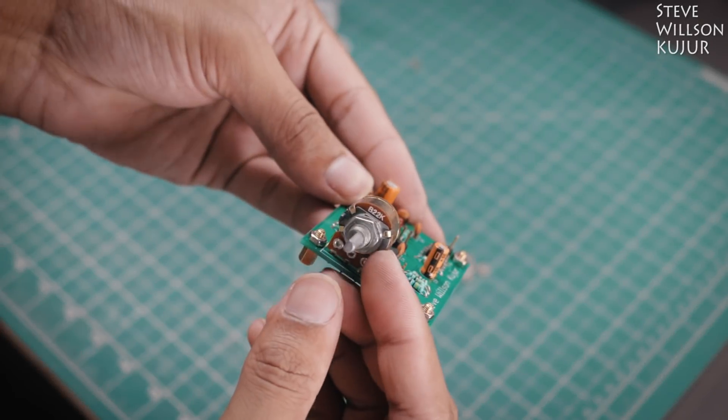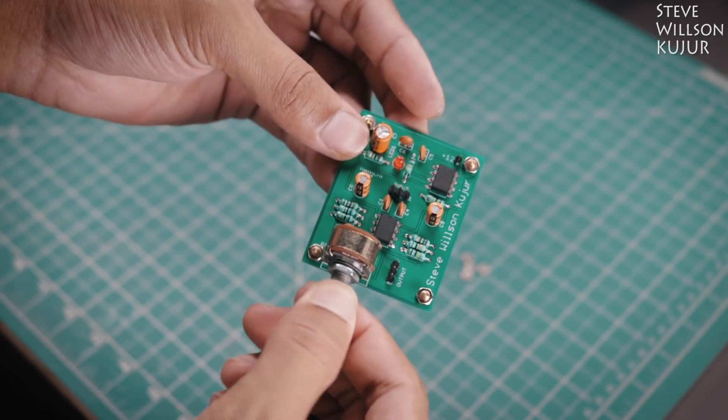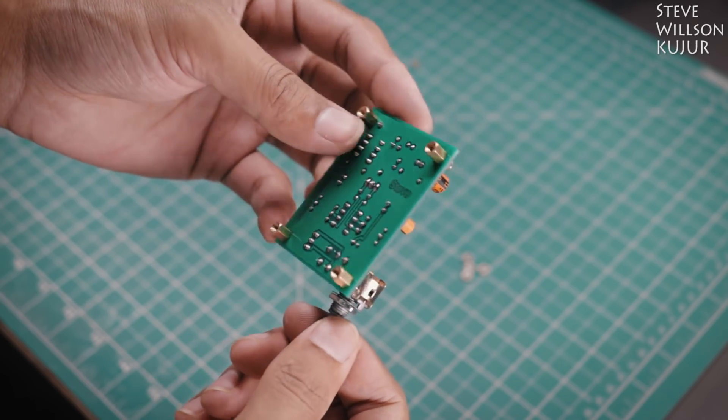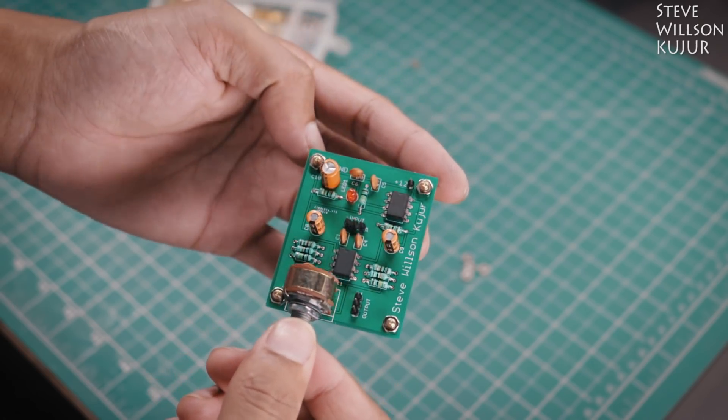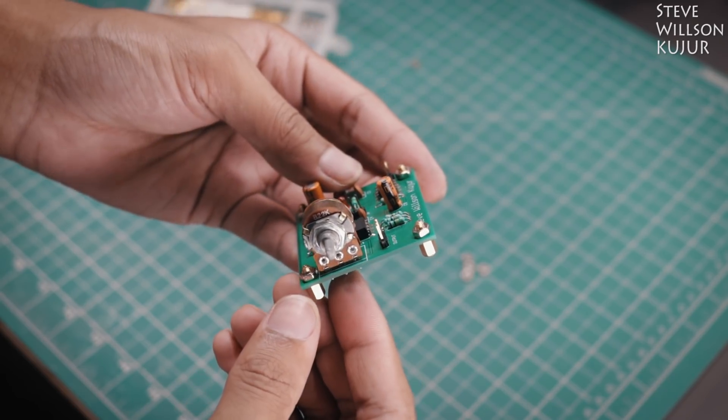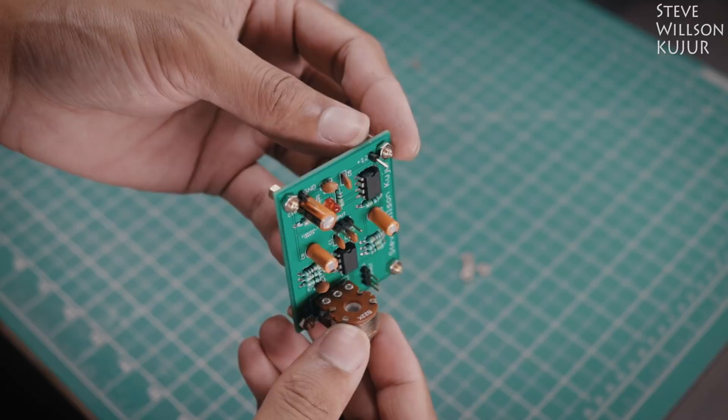Hello YouTube, Steve here. In this video I'm going to show you how to make an Op Amp, Operational Amplifier. This is used to amplify the source signal for a main amplifier. In other words you can call it a signal booster. Now let's make it.